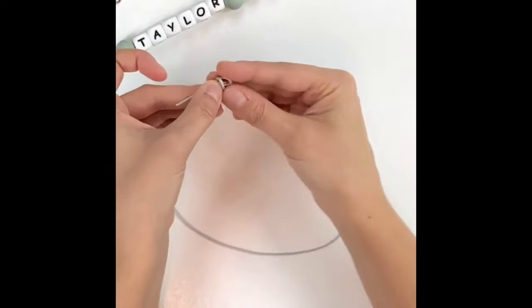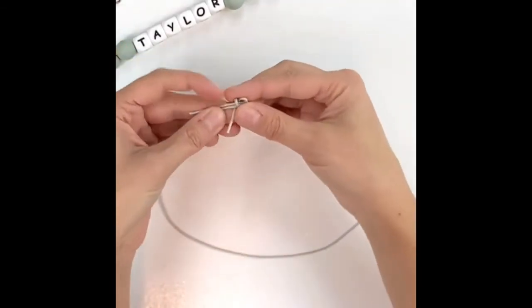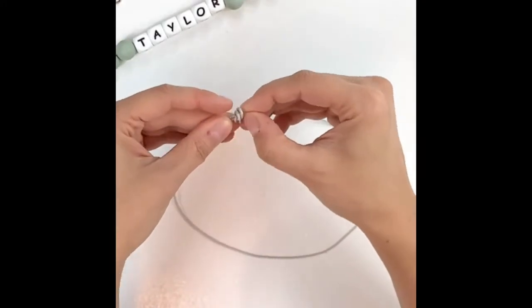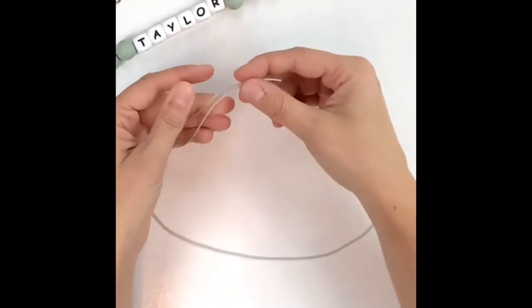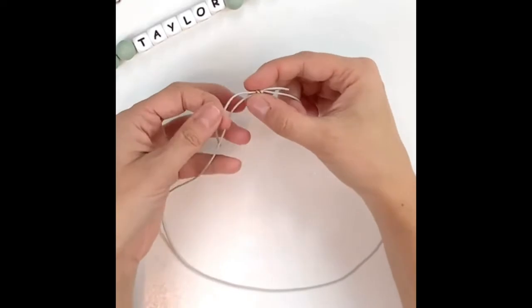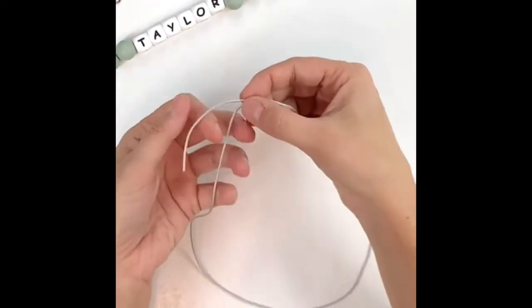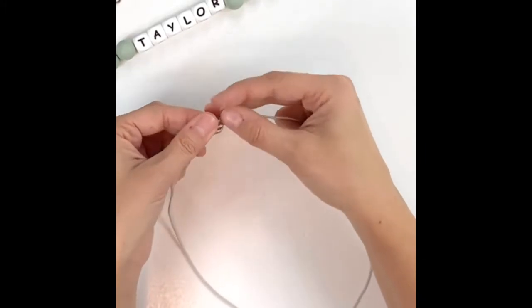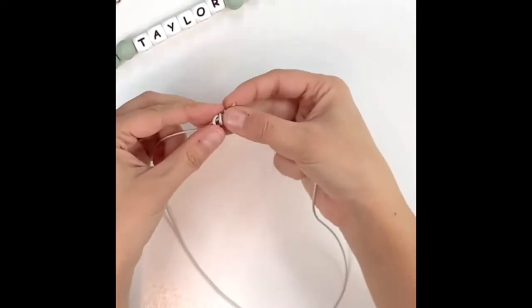You're going to tuck that tail in and through and pull. You're going to do the same thing on the other side, except for this time you're going to take the top cord, you're going to fold it down, and again you're going to loop it around twice so that you have two loops.